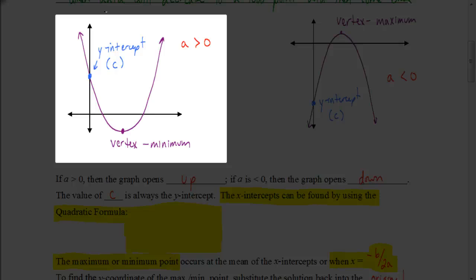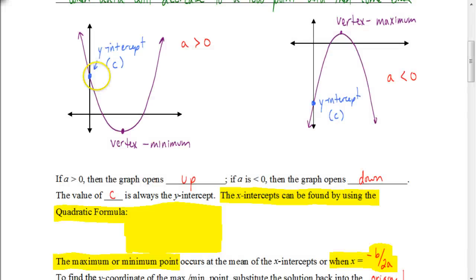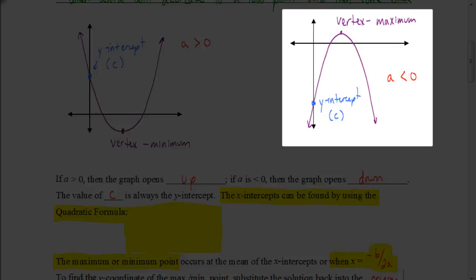Here on the left, we have a parabola being graphed. When the value for a in standard form ax squared plus bx plus c is positive, the parabola opens upward, and the vertex at the bottom is a minimum value. The y-intercept is always whatever the c value is. On the right, when a is negative, the parabola opens downward and the vertex is the maximum value. There will always be one and only one y-intercept, equal to the value of c.